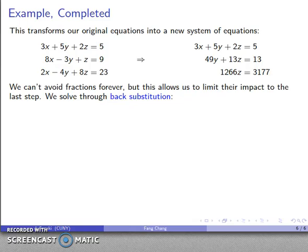And I can't avoid fractions forever, but I can limit their impact to just the last step. So I can solve this system using back substitution. I can start with the simplest equation here, 1266z equals 3177, and so that gets me z equals 3177 over 1266, and if we do take the time to reduce it, that gets me 1059 over 422.